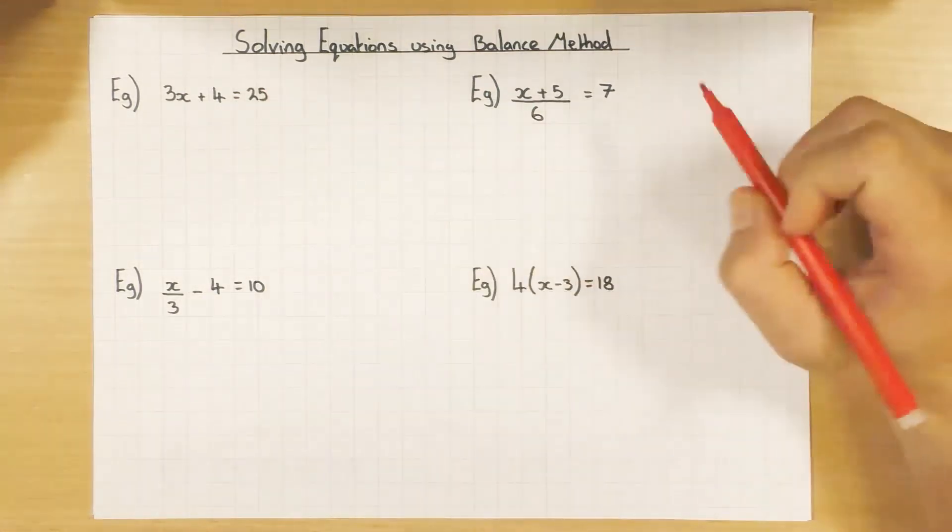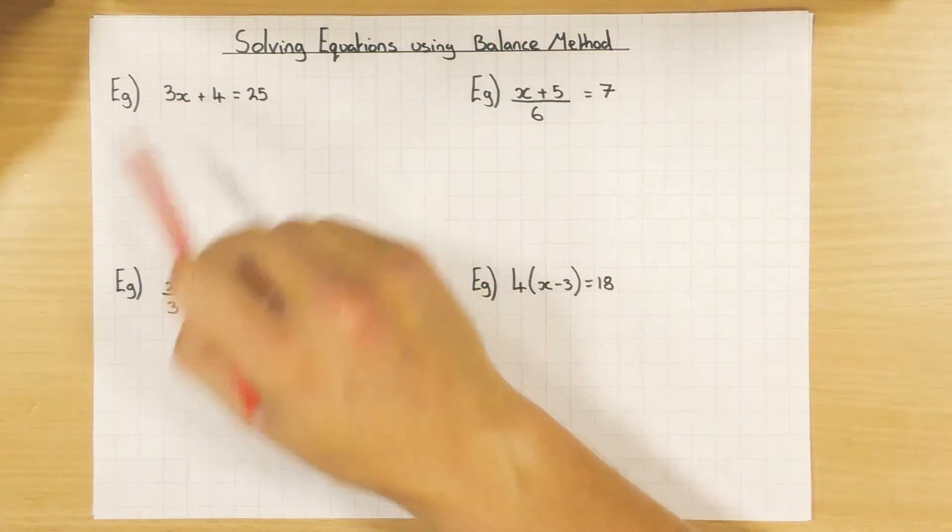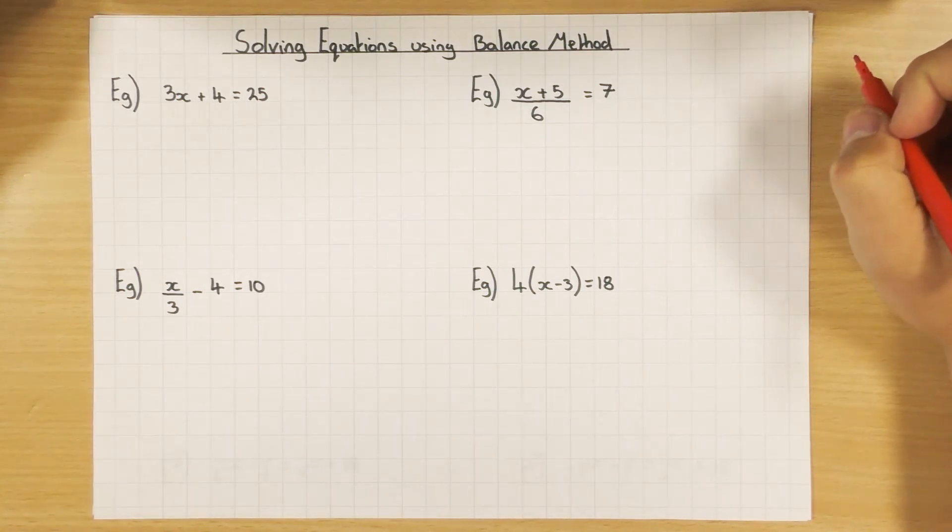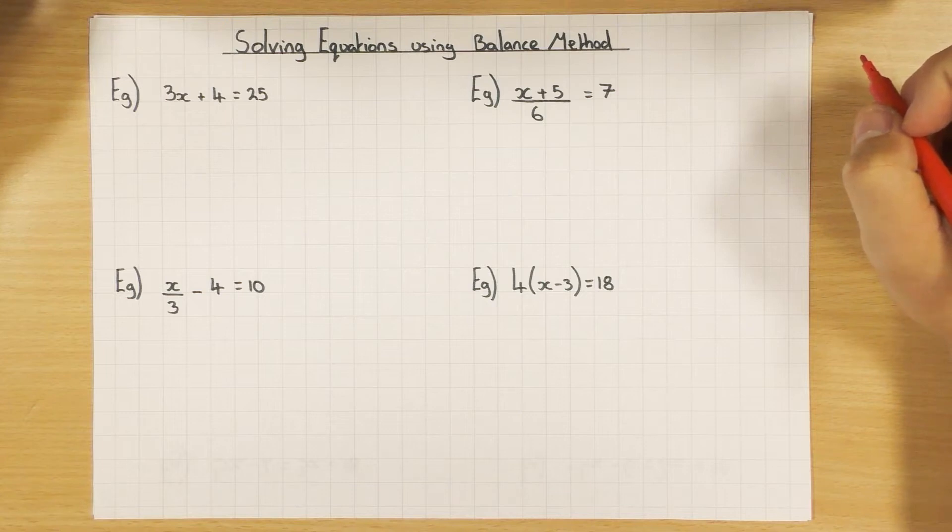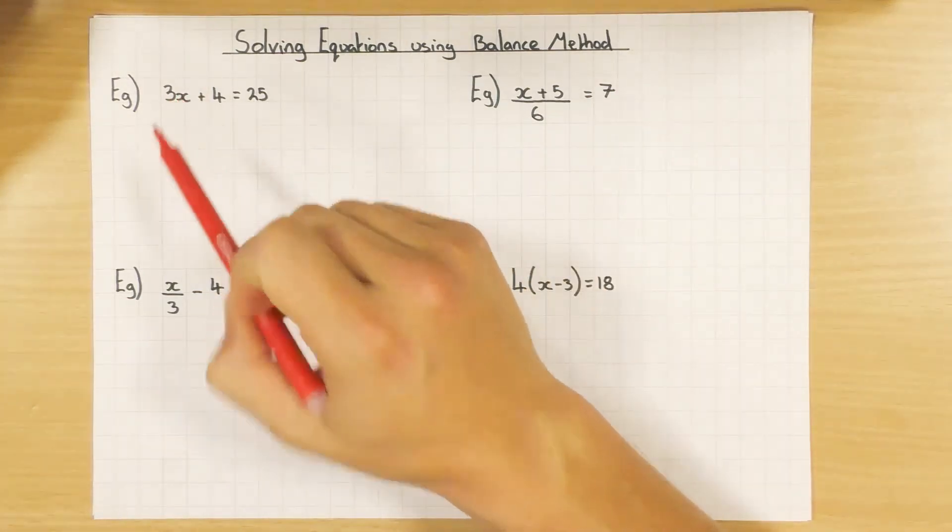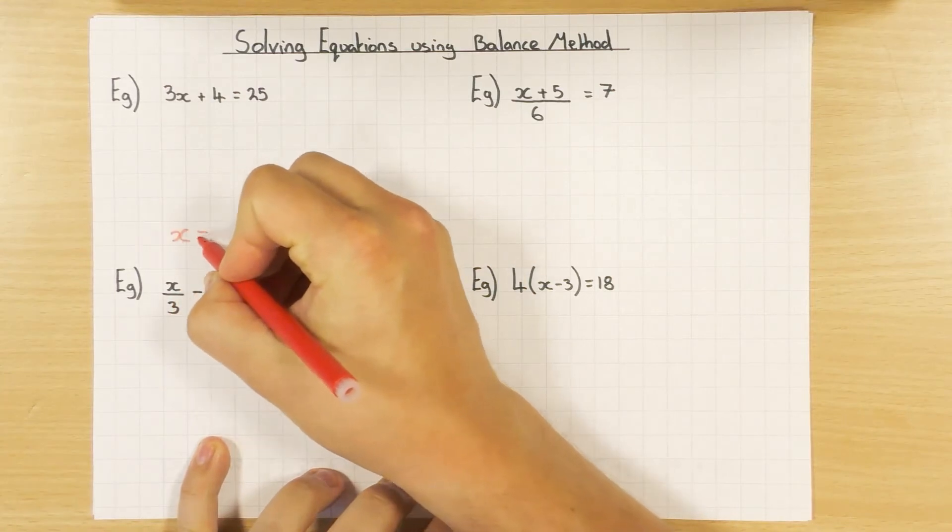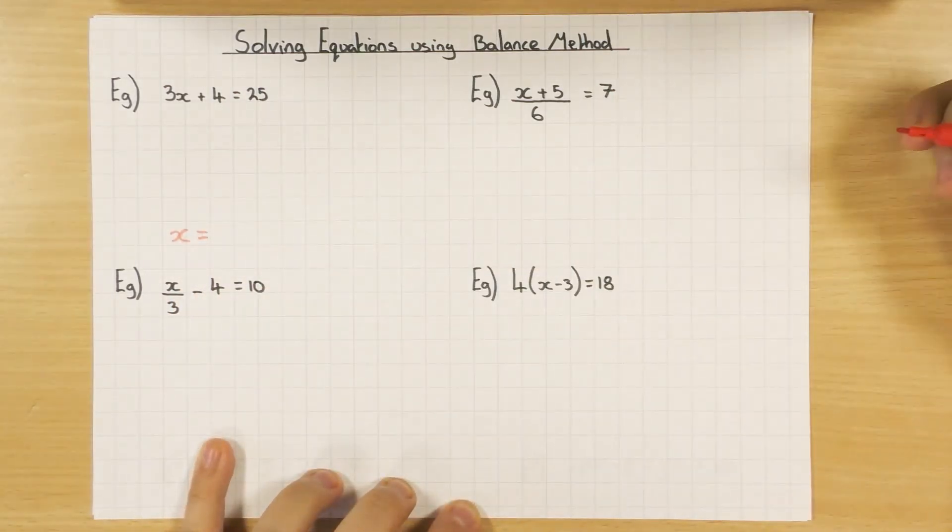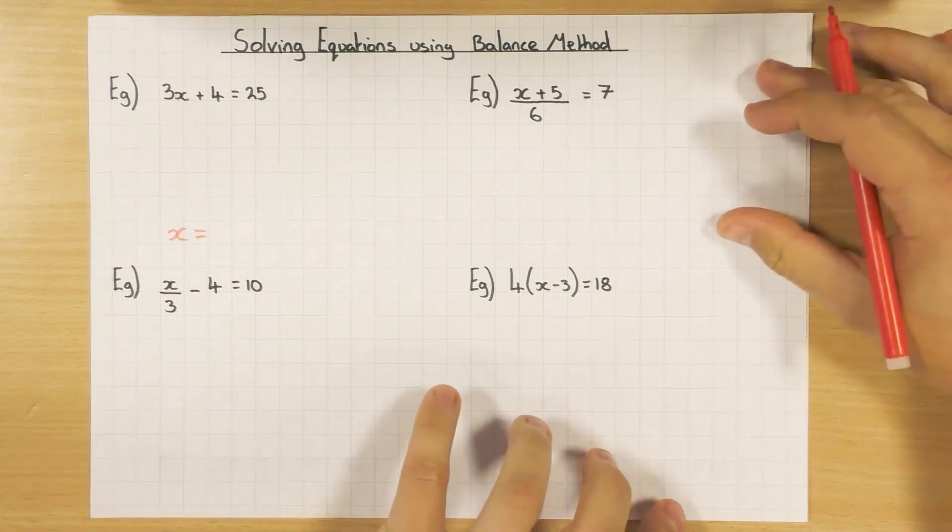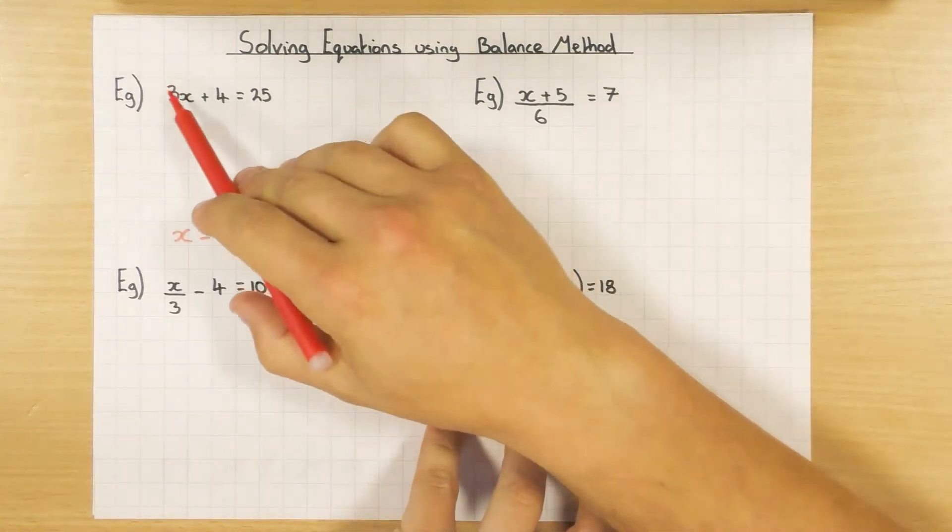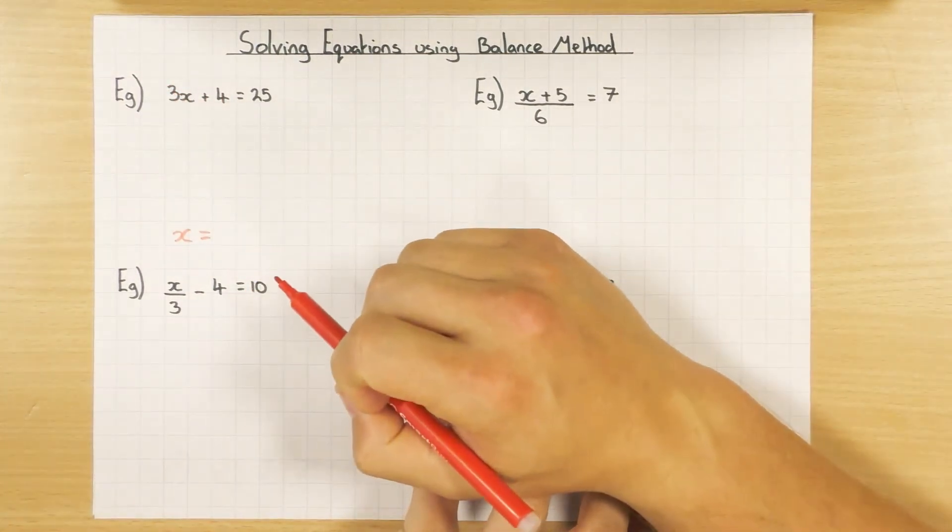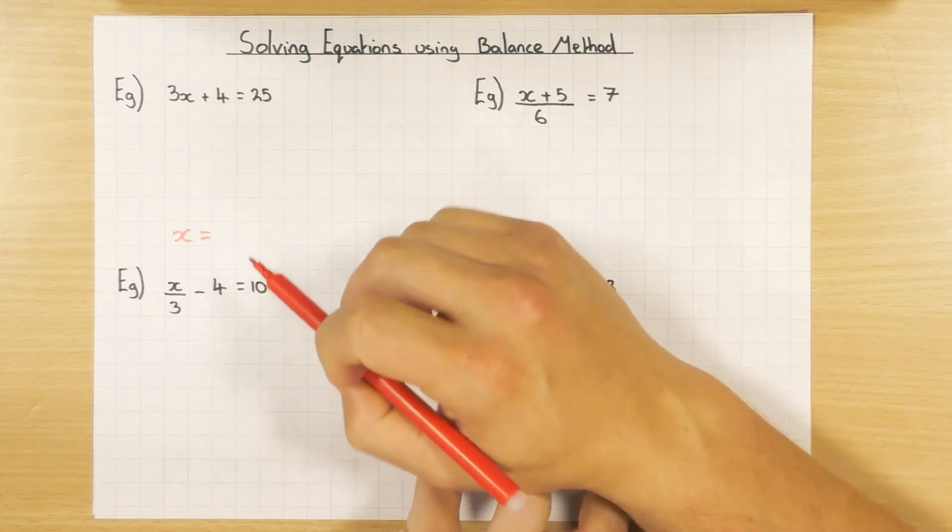When it comes to solving equations, remember, I'm just trying to work out the value of x. I'm trying to work out what number is represented by x. To do that, I want to get x on its own. So my end game is x equals something, a number. At the minute, x is on the left-hand side. I want to get rid of everything else apart from x.